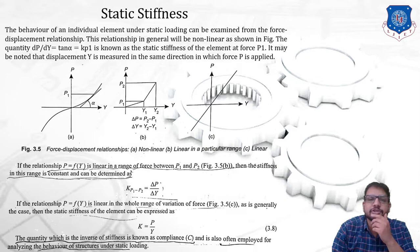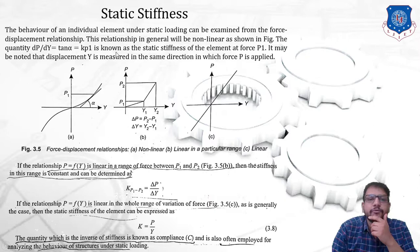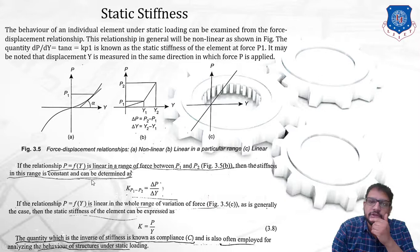It may be noted that displacement y is measured in the same direction in which force p is applied. If the relationship p = f(y) is linear in a particular range — say between forces p1 and p2 — then the stiffness in this range is considered constant, as shown by a straight line in that region.